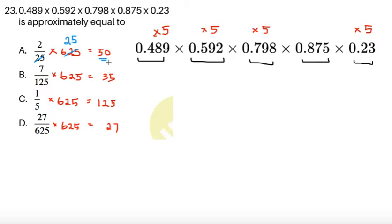For choice B, 125 and the 625 cancels. The 625 becomes a 5, so it's 7 times 5, which gives 35. 1 fifth times 625, the 5 and the 625 cancel. 625 becomes 125, so 1 times 125, that's 125. And then here, just a simple cancellation of 625, that gives us 27.